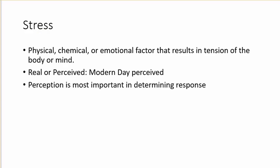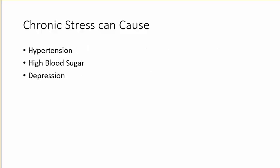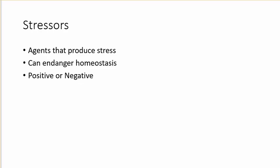So stress is anything — physical, chemical, or emotional factors — that results in tension of the body or the mind. It can be real or perceived, and perception is really the most important part of that. Chronic stress can cause hypertension, high blood sugar, and depression.